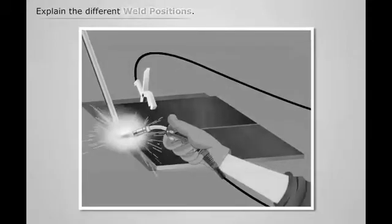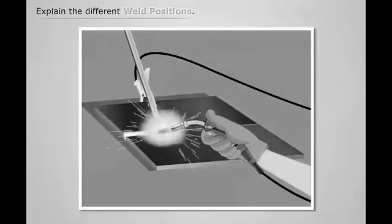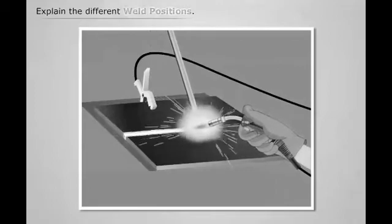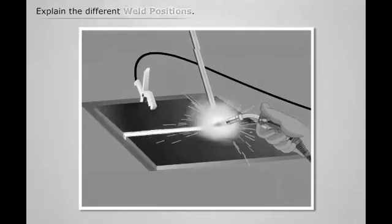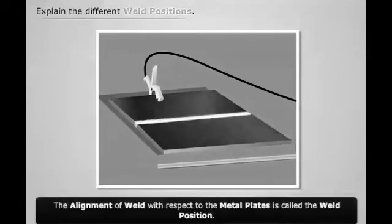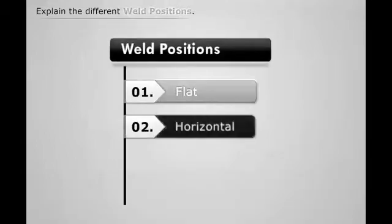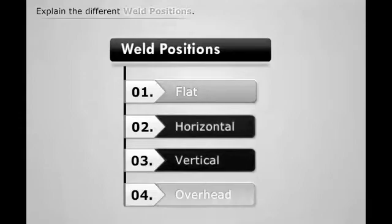We have seen that in the welding process, the weld is produced between the metal plates and its alignment is relative to the metal plates. The alignment of the weld with respect to the metal plates is called the weld position. The weld positions can be flat, horizontal, vertical, or overhead.